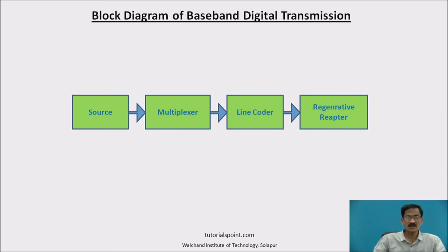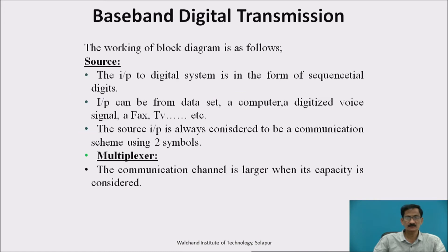This is the block diagram of baseband digital transmission. The main blocks are: Source, Multiplexer, Line Coder, and Regenerative Repeater. Let us discuss each one by one.